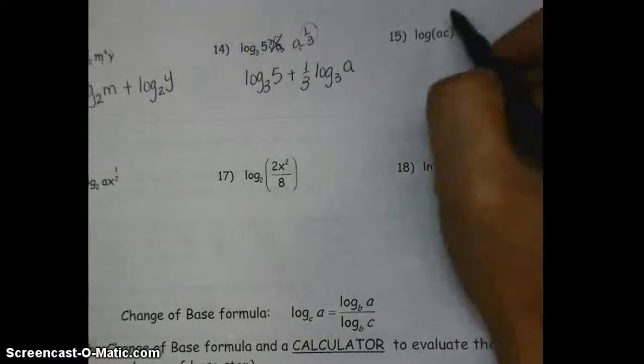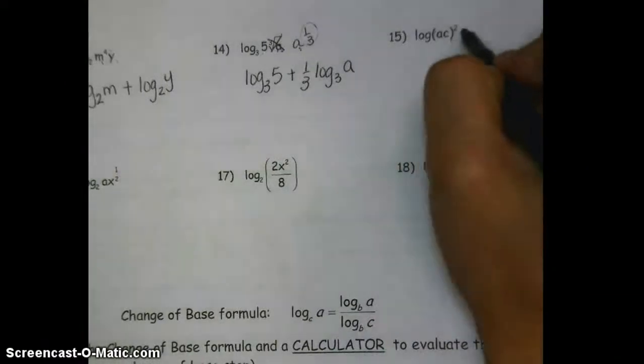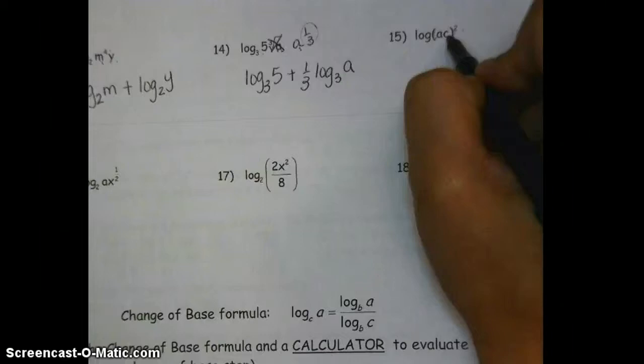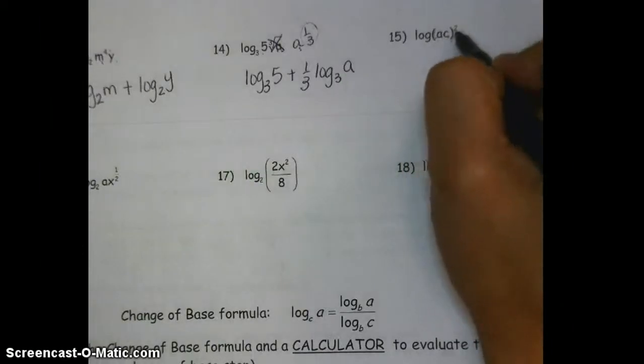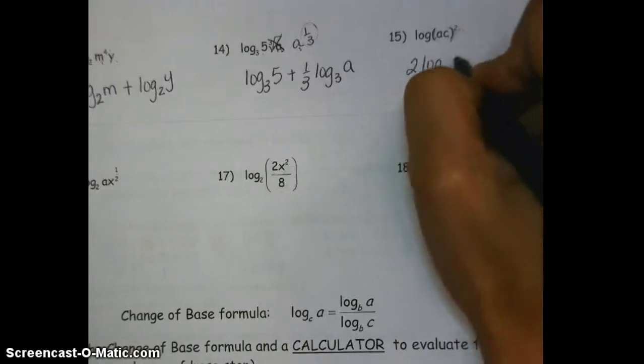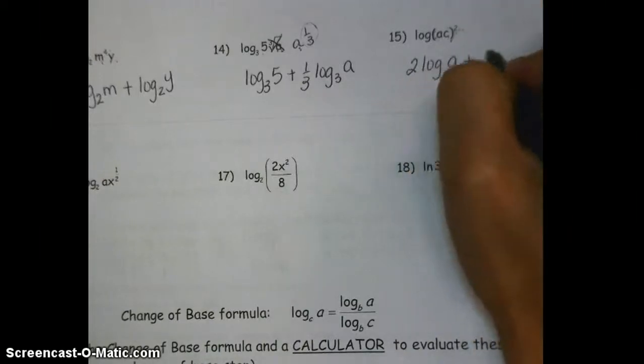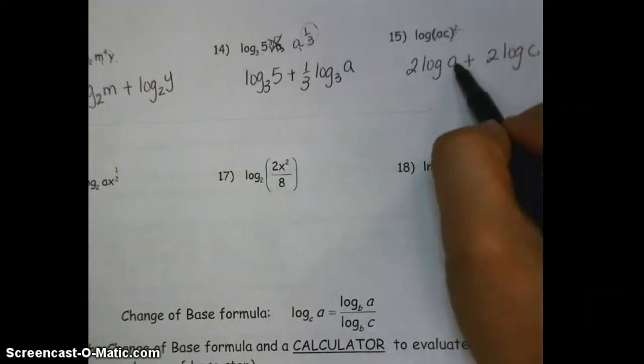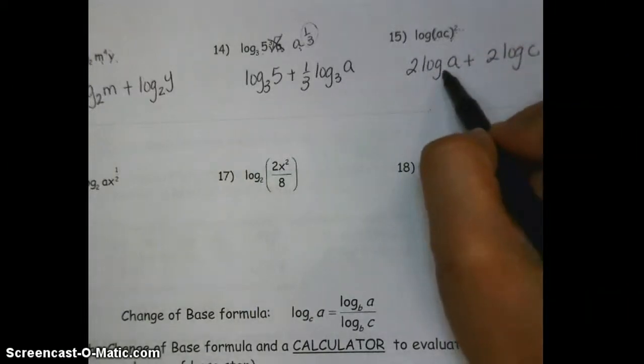On number 15, I have an argument that's being squared. This argument is a product, so that means I will have 2 logs. And each log is going to have a multiplier of 2 because the entire argument is being squared. So this is 2 log of a plus 2 log of c. And be careful that you're not trying to write a as a subscript because really the base here is the common base 10.